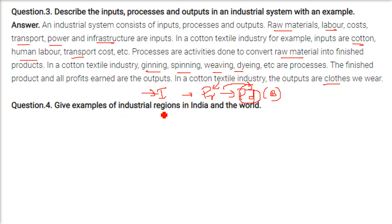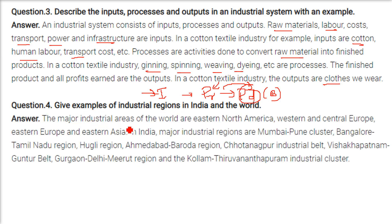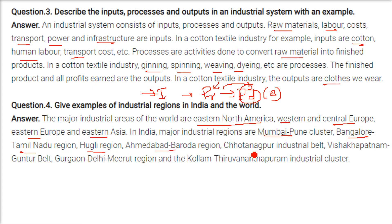Give examples of industrial regions in India and the world. Major industrial areas of the world include Eastern North America, West and Central Europe, Eastern Europe, and Eastern Asia. In India, major industrial regions include the Mumbai-Pune cluster, Bengaluru-Tamil Nadu region, Hugli region, Ahmedabad-Vadodara region, Chota Nagpur Industrial Belt, Vishakhapatnam-Guntur belt, Gurgaon-Delhi-Meerut region, and Kollam-Thiruvananthapuram industrial cluster.